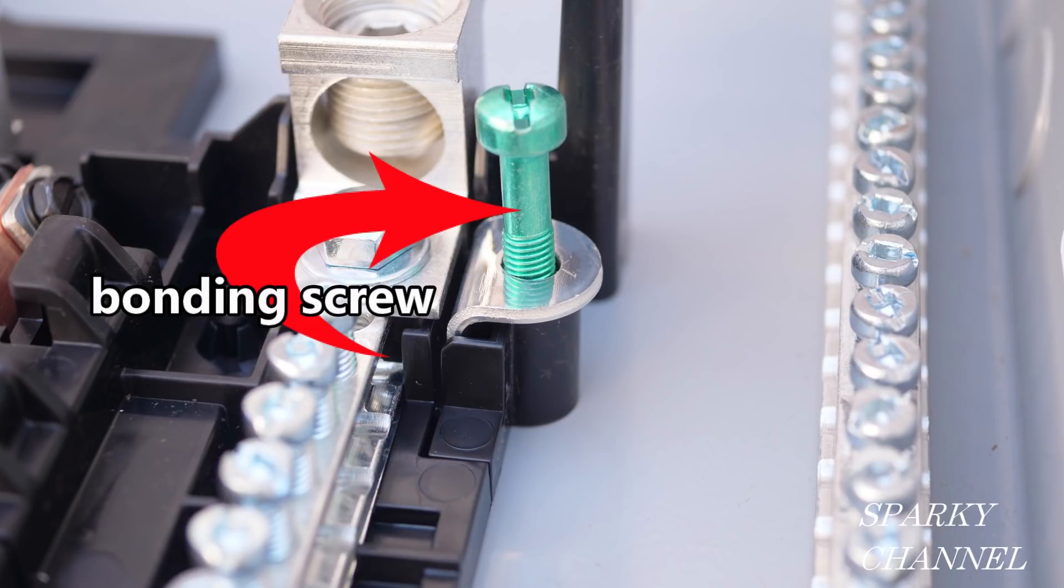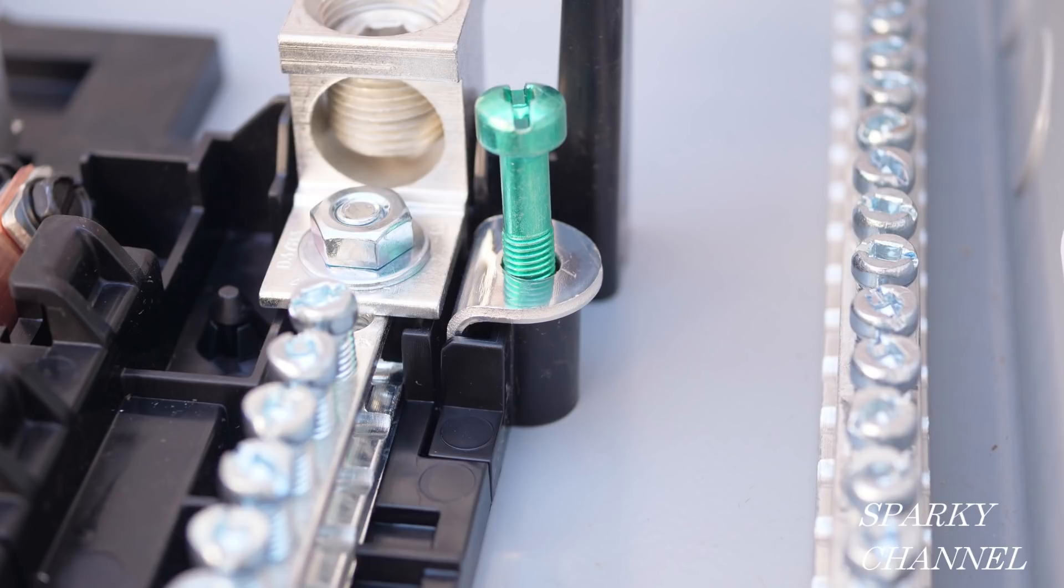On the Siemens panel, the bonding screw comes attached but not screwed in. On some brands of load centers, the bonding screw will come in a little plastic bag and you have the option of installing it or not.